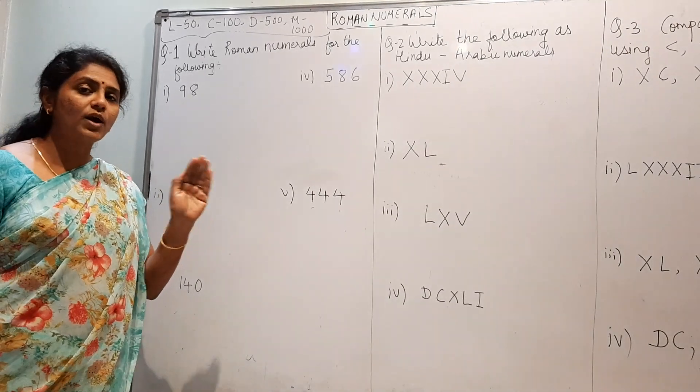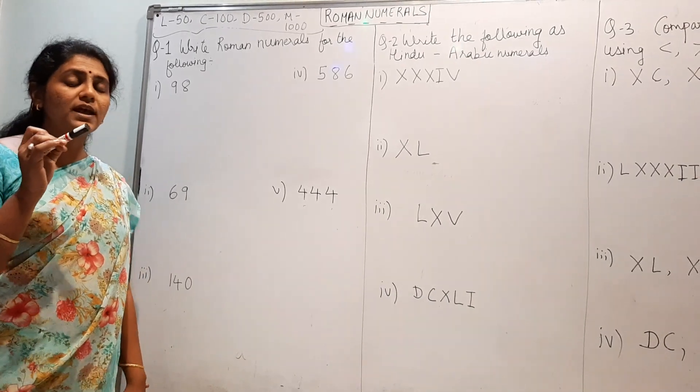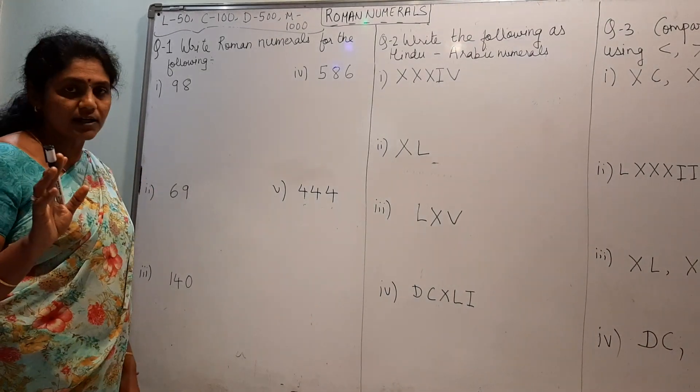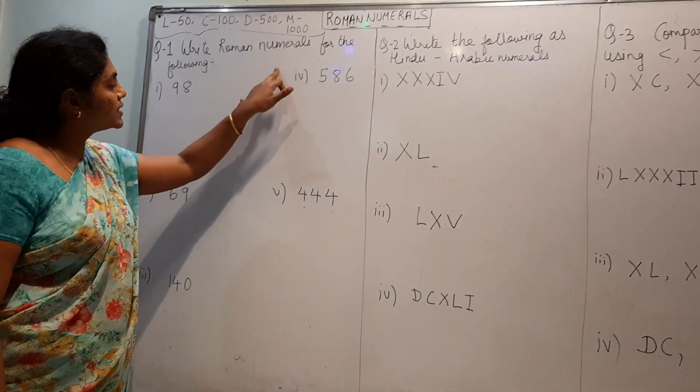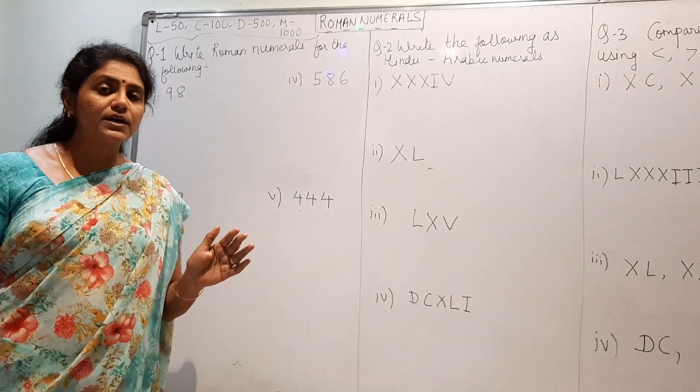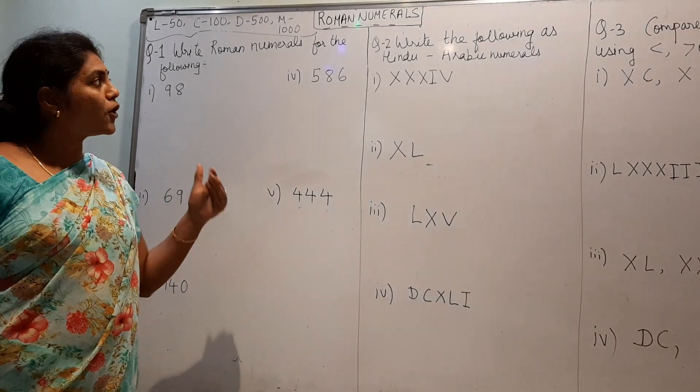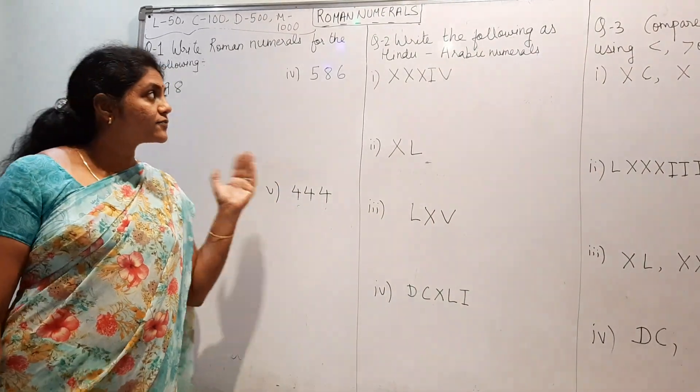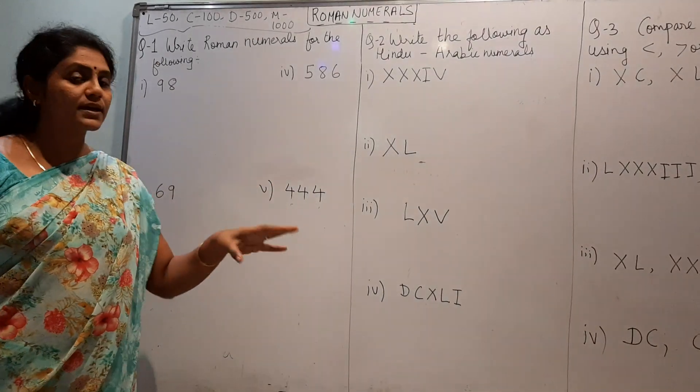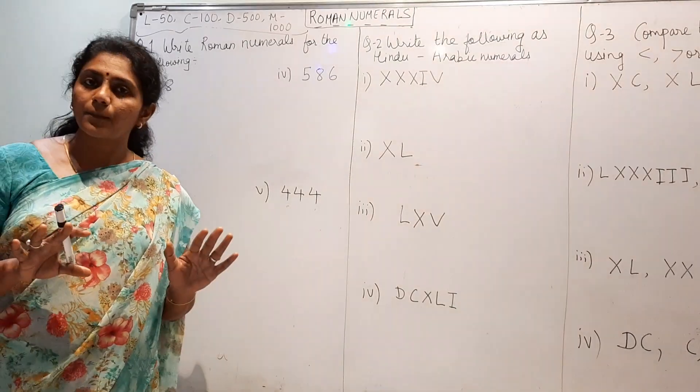Before starting the question, I will revise the notation used for roman numerals. L stands for 50, C 100, D 500 and M 1000. And you know, 1 to 10, how I, then II, III, IV, similarly 10 you represent by X. These questions are enough for you. If you understand this and do practice as homework, this will clear your topic.